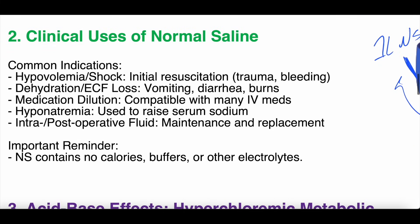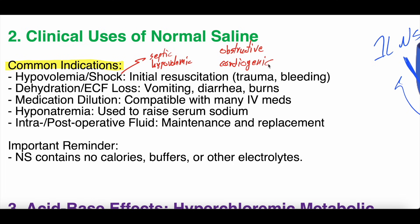Clinical uses of normal saline — common indications tend to be similar to common indications for fluid in general. Hypovolemia or shock: septic shock and hypovolemic shock most often need fluids. Obstructive shock — things like pulmonary embolism, tamponade, tension pneumothorax — usually need some fluids to a degree, but you can also get too much. Cardiogenic shock, when the heart is not working, does not need fluid. For initial resuscitation with normal saline, we personally are fans of lactated ringers, but you can use normal saline — some studies slightly favor lactated ringers, especially for renal dysfunction, while others show equivalency.